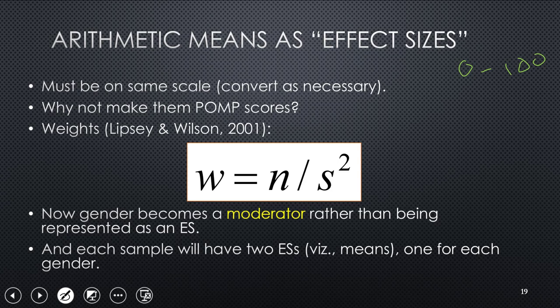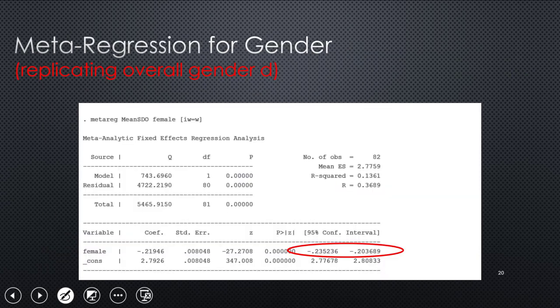And now you change gender into a moderator rather than being represented as an effect size. So age and gender will become a moderator. So proportion of the sample that's female or male is the moderator. And you're going to have two effect sizes for each study. These are means that are now interpreted as effect sizes. So how much of something becomes an effect size. You're going to have one for each gender. We're splitting these out of studies. In fact, this pool of studies were ones where the studies disaggregated for gender.